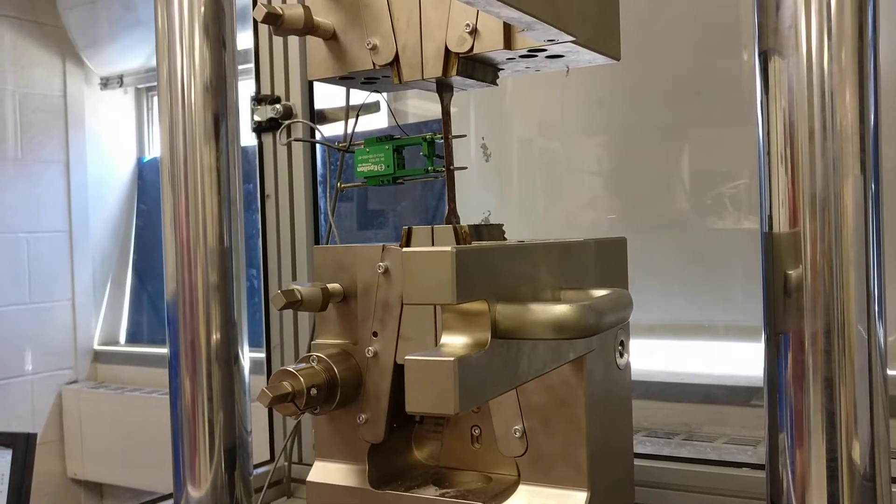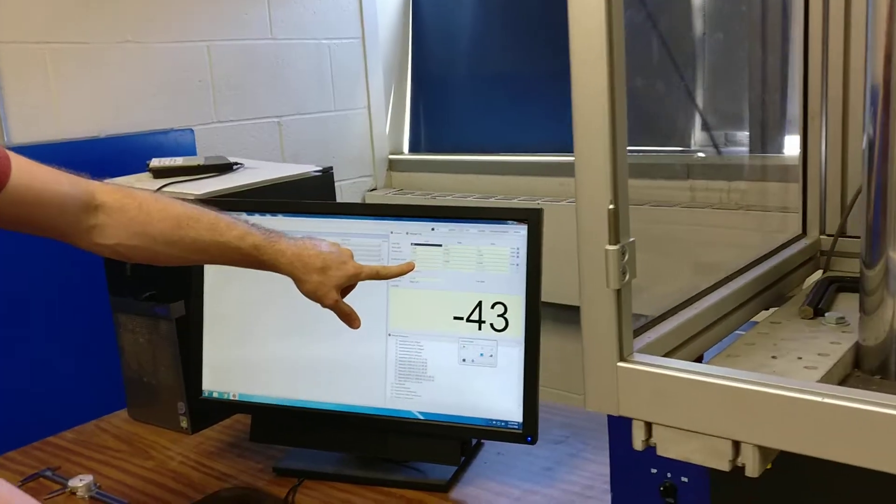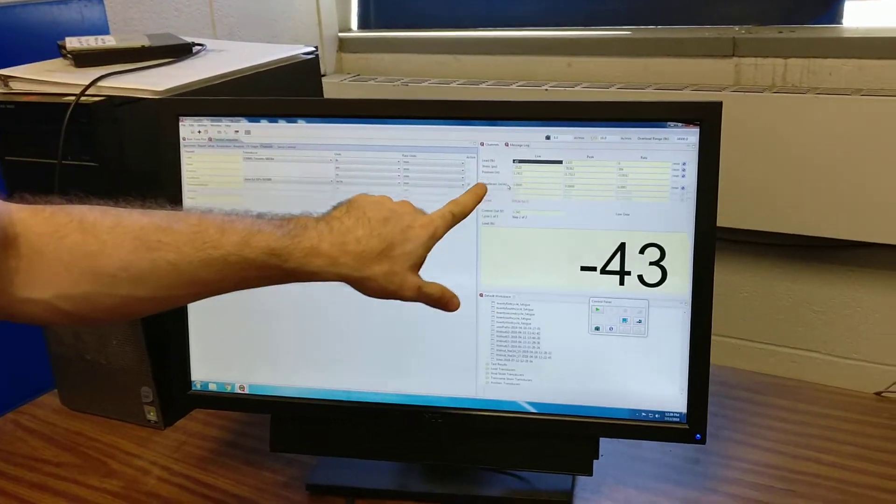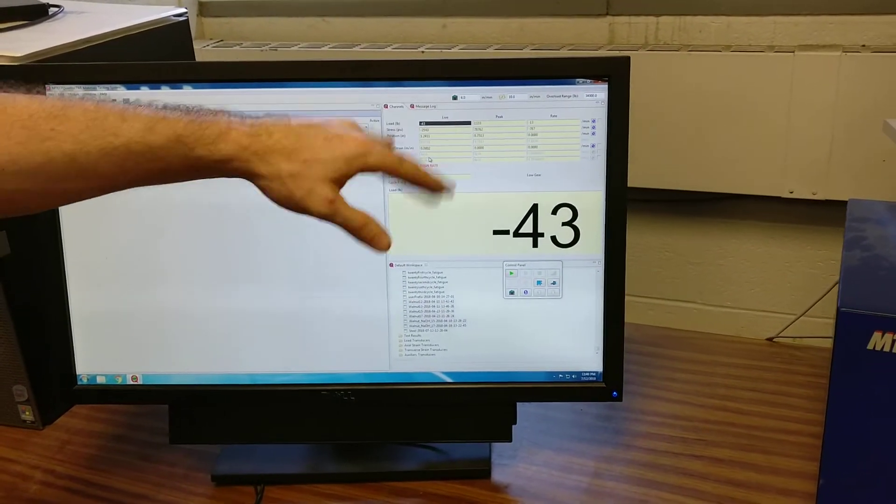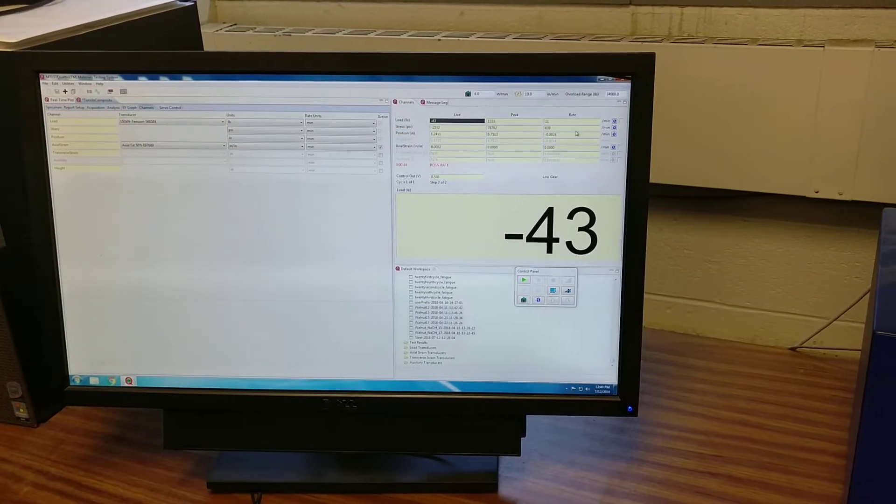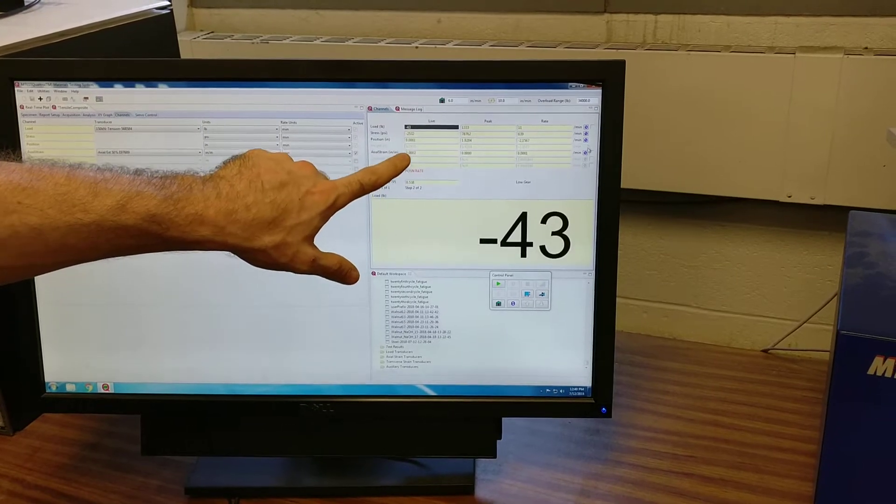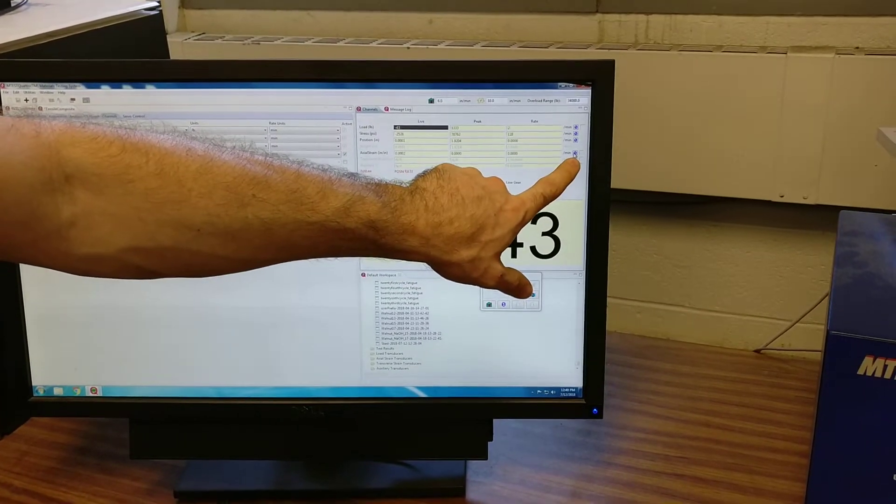At this point, we'll make sure that that axial strain number is zeroed up. So we're going to go to axial strain. We can actually pretty much zero everything except for the load because we're actually compressing the sample a little bit. So we can zero out position and axial strain by clicking these zero lines on the sides.